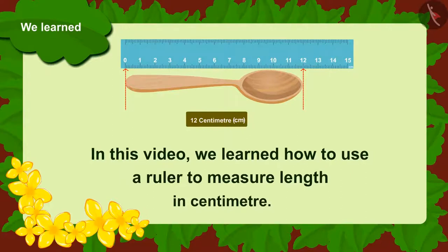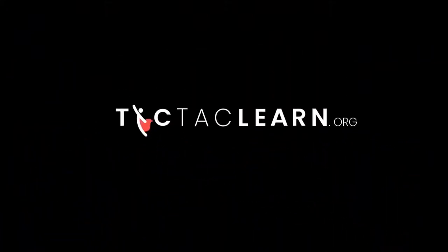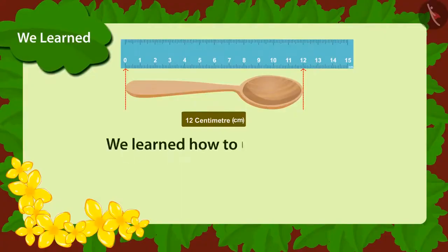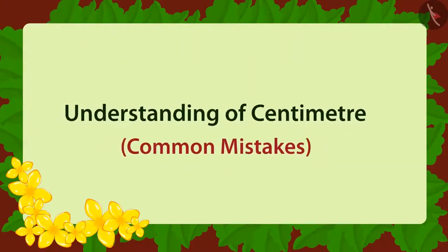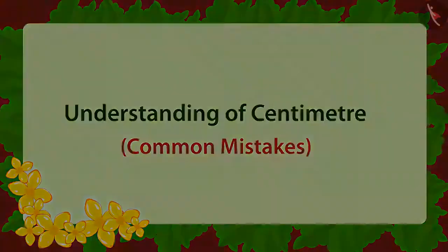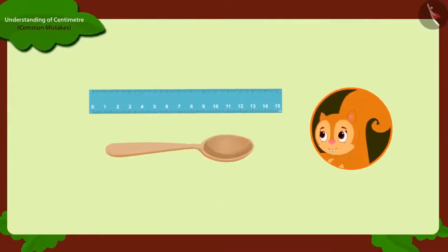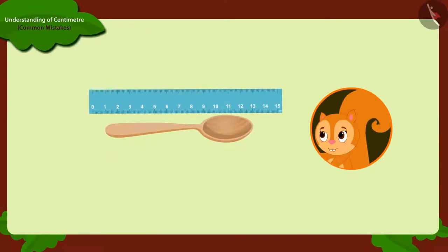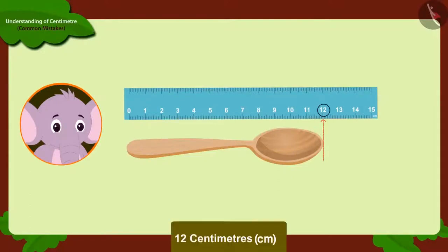Kids, in this video we learned how to use a ruler to measure length in centimeters. In the next video we will see some common mistakes related to this. Chanda became very happy after learning about the ruler from Appu. She measured her spoon again with a ruler, but this time she got the length of the spoon as 13 centimeters. Chanda started wondering how this happened — when Appu measured the same spoon, it was 12 centimeters.